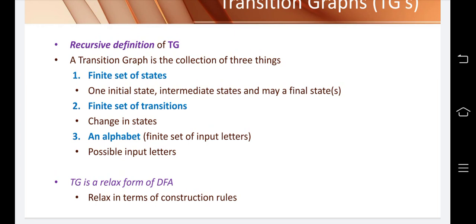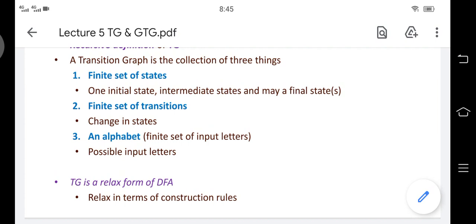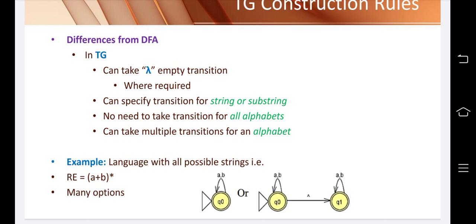Suppose we have an alphabet {a, b} — this is the finite set of alphabets. The transaction graph is a relaxed form of DFA, deterministic finite automata. It is relaxed in terms of construction rules. Transaction graph is different from DFA because it can take empty transactions. DFA cannot take empty transactions, but transaction graph can take empty transactions whenever required.